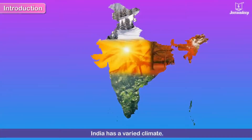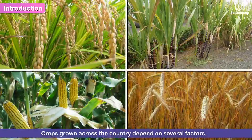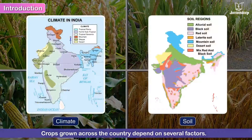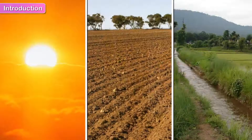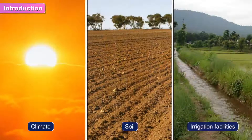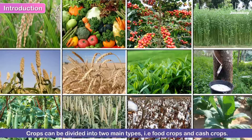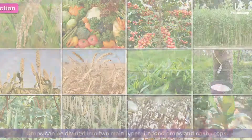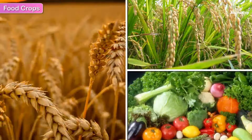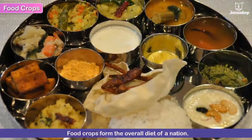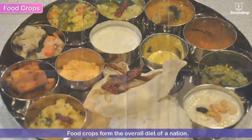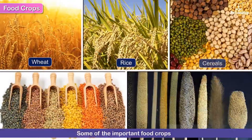India has a varied climate. Crops grown across the country depend on several factors such as climate and soil. Climate, soil, and irrigation facilities contribute majorly towards cultivation of different varieties of crops. Crops can be divided into two main types: food crops and cash crops. Food crops form the overall diet of a nation.